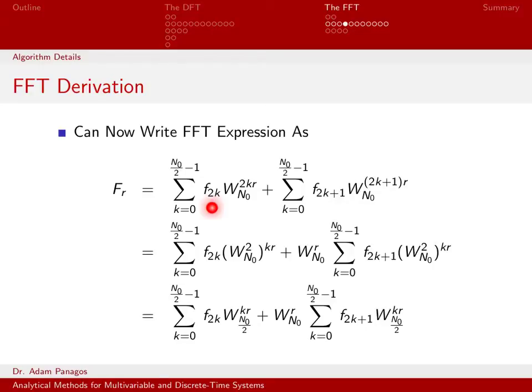So when K is 0, this is F0. When K is 1, this is F2. When K is equal to 2, this is F4. So all my even samples of F are right here. Similarly, this piece right here is also a sum over n naught over 2 things, but it's dealing with all the odd samples of F. So at this point, I haven't changed anything at all, and I even haven't introduced the G or H notation yet. All I've done is rewritten the FFT expression on the previous chart in terms of the even parts and the odd parts of F of K.